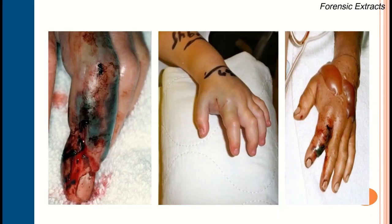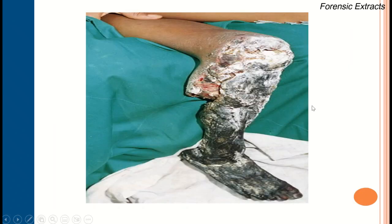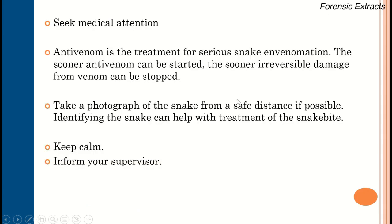Local reactions include edema — as seen in the photographs where the limb, finger, and child's hand are swollen. Blisters are also characteristically seen in viper bites. If the snake bite is not treated and a large quantity of venom is injected, it can cause local necrosis if early management is not done.